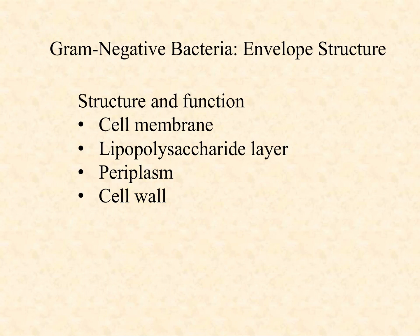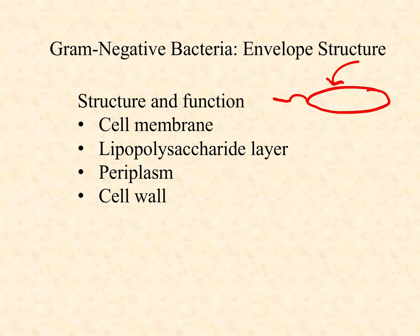In the first one, we looked at gram-positives. In this one, we're looking at gram-negatives, and we want to look at the structure and function of all the layers of that envelope. Remember, the envelope is the interface between the outside and the inside. It's not just a membrane — there's more to it. And the gram-negatives and gram-positives are different from one another in this way.